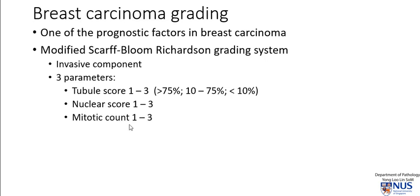The third component is the mitotic count. We go to a high power magnification field and count 10 consecutive fields, totaling all mitoses across those 10 fields. Depending on the size of the microscope field you are using, there are cutoffs for a score of 1, 2, and 3 — with a score of 3 representing the highest number of mitoses.